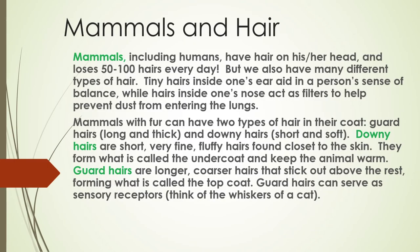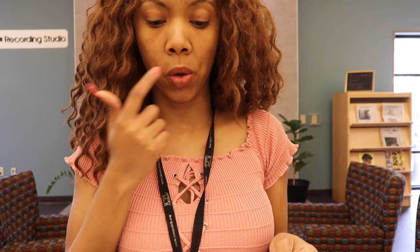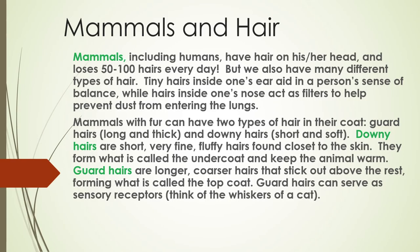Mammals, including humans, have hair. A person has hair on their head and loses 50 to 100 hairs every day. We also have many different types of hair — tiny hairs inside our ears aid in a person's sense of balance, while hairs inside the nose act as a filter to help prevent dust from entering the lungs.